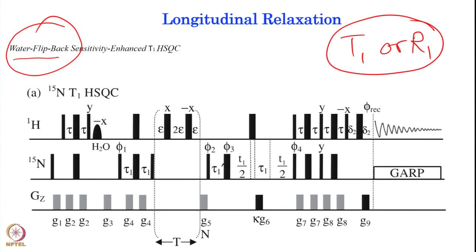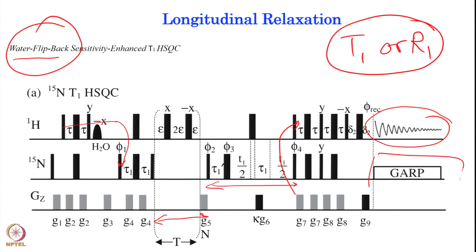Here is the water flip-back experiment. Typically we start with an INEPT transfer, come to nitrogen, then encode T1 — that is the T1 variable — then frequency encoding, and after that we transfer back to proton with sensitivity enhancement. Finally we acquire on proton while decoupling on nitrogen; gradient pulses are used for coherence selection and killing undesired magnetization. This T1 period measures the longitudinal relaxation rate.